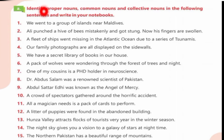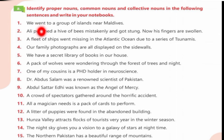Dear students, identify proper nouns, common nouns, and collective nouns in the following sentences and write in your notebooks. First sentence: We went to a group of islands near Maldives. 'Maldives' is a proper noun and 'group of islands' is a collective noun.